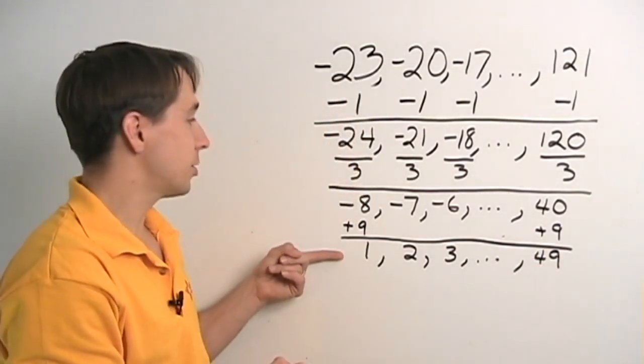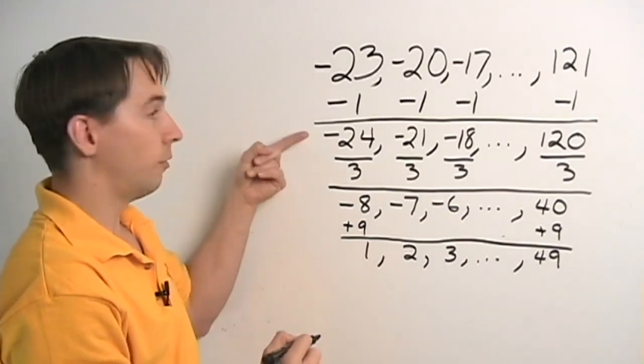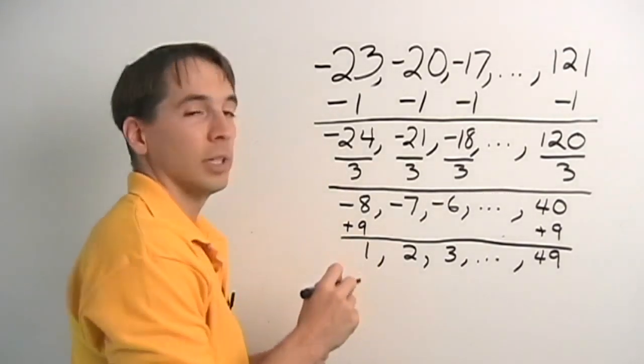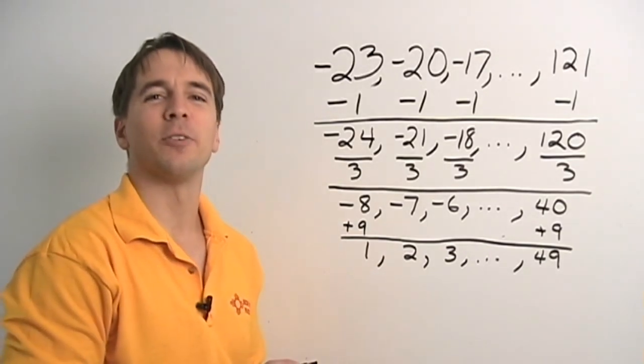There are 49 numbers in this list, so there are 49 numbers in this list, 49 numbers in this list, and 49 numbers in our original list. And notice we didn't even have to deal with fractions.